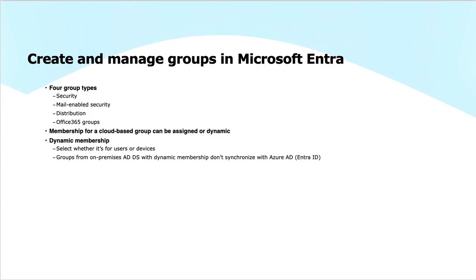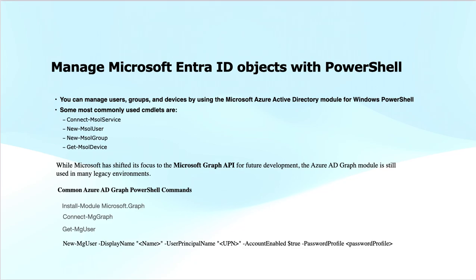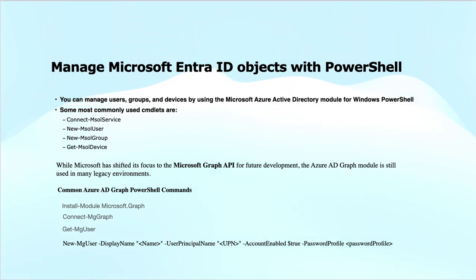Groups from on-premises Active Directory with dynamic memberships don't synchronize with Azure Active Directory or Entra ID. To manage identities — users, groups, and service principles — we can use PowerShell cmdlets. We had the Azure AD PowerShell module earlier; today we use the PowerShell Graph module, along with the MS Online module for Microsoft 365 to manage Entra ID. Commonly used commands cover users, groups, device management, and more.